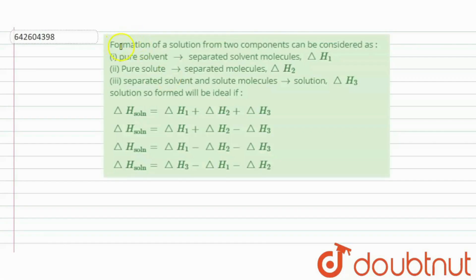Hi everyone, let's take a question. The question says that the formation of a solution from two components can be considered as first, pure solvent to separated solvent, that is delta H1, pure solute delta H2, and separated solvent and solute delta H3. It forms a solution.